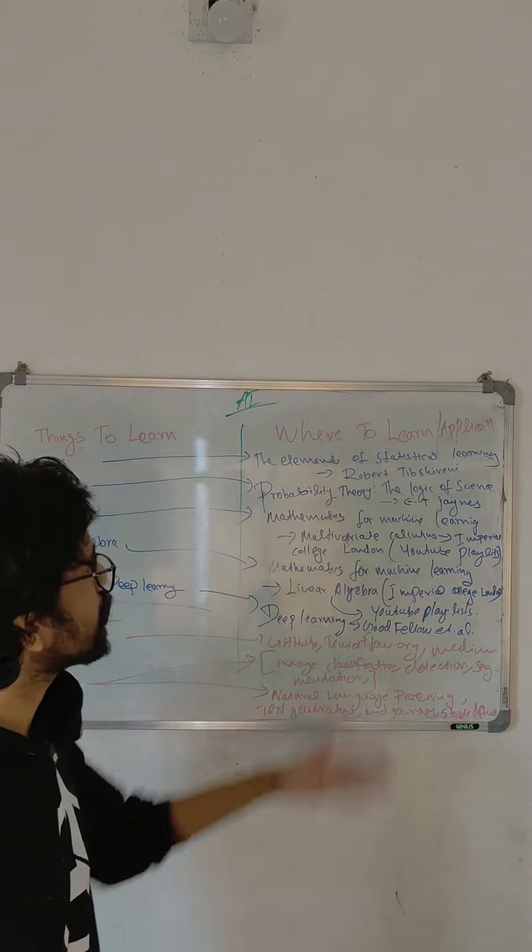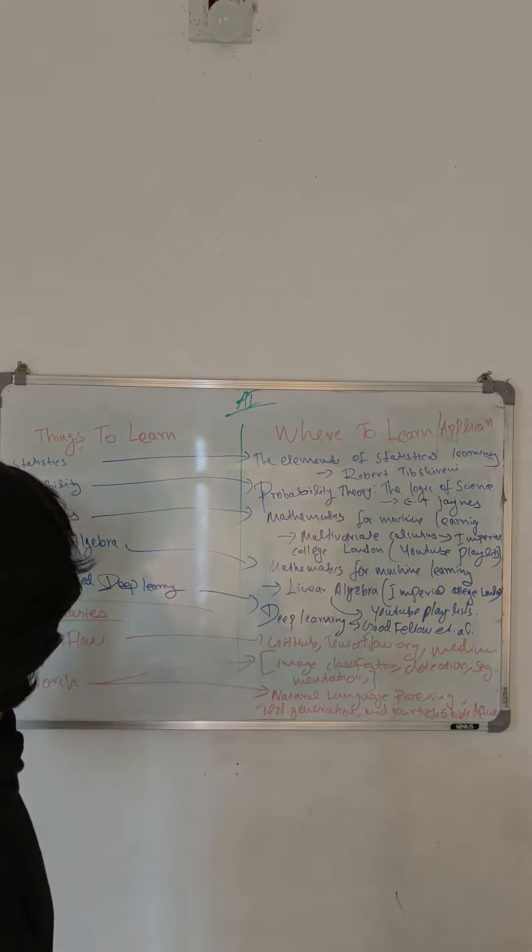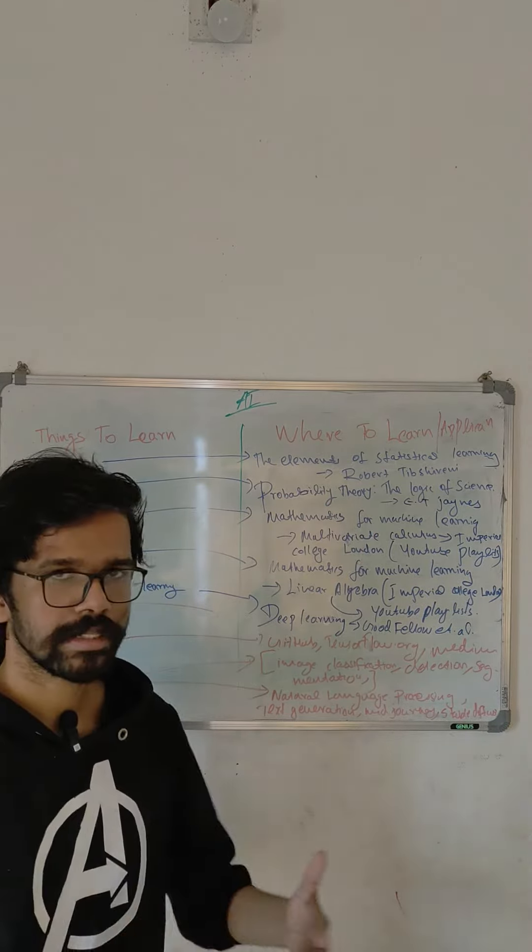We are going to learn about the Elements of Statistical Learning by Robert Tibshirani, available as an online PDF. The Probability Theory: The Logic of Science by E.T. Jaynes.